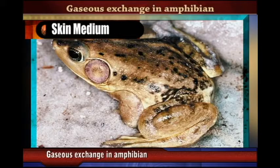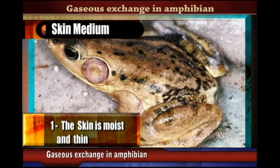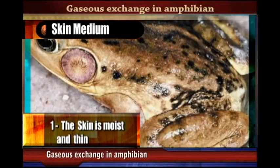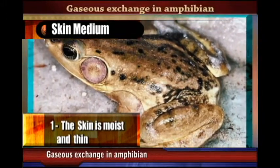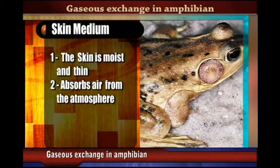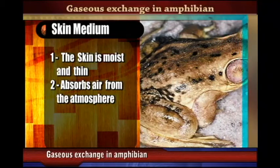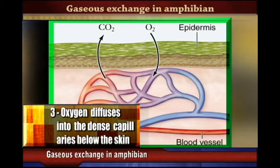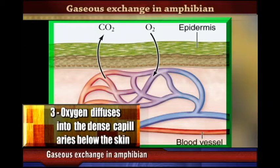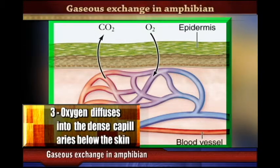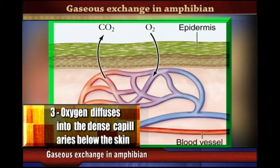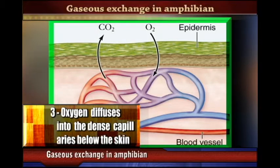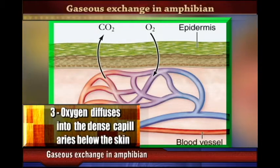We shall start with the skin. The skin of amphibians is moist and very thin, which means it can easily absorb air from the atmosphere. Because of the moisture, oxygen easily dissolves, and because of the thin layer, it easily diffuses into the skin. Oxygen dissolves in the moisture on the skin and diffuses into the dense capillary network below the skin.